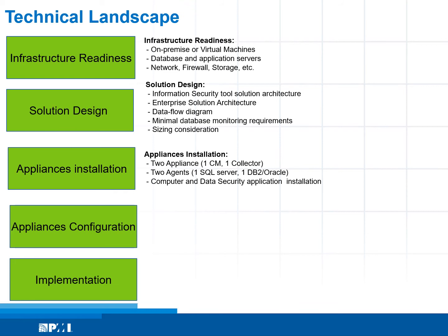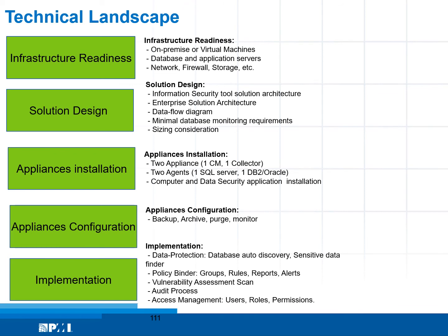For appliance configuration, we want to make sure backup, archive, ports, and monitoring are configured properly. For implementation, we want to make sure functionalities are in place. For data protection, that could be database auto-discovery and sensitive data finder. For policy binding, make sure groups, rules, reports, and alerts are being generated.